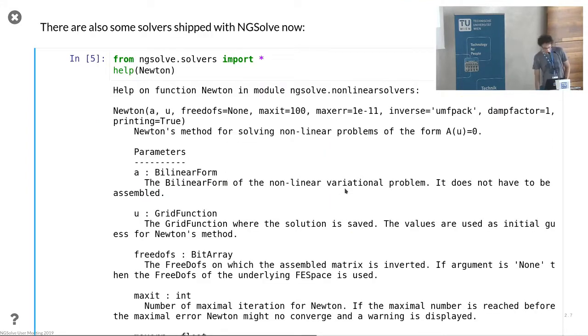You can also now see that there's something shipped with NGSolve so you don't have to write your own Newton solver. You can take the Newton solver from the solvers module from NGSolve and that has some few arguments that are more or less obvious. So you prescribe your form, your grid function that you want to work with, you prescribe which Dirichlet degrees of freedom you might have and so on.